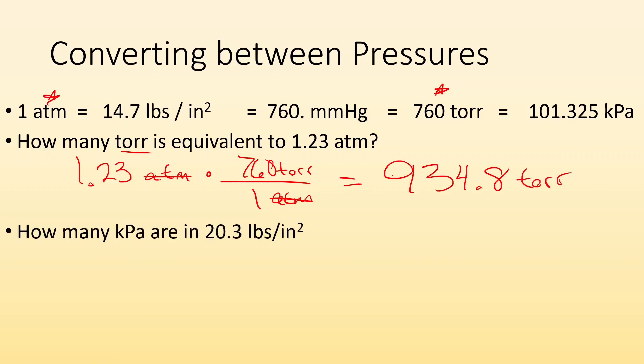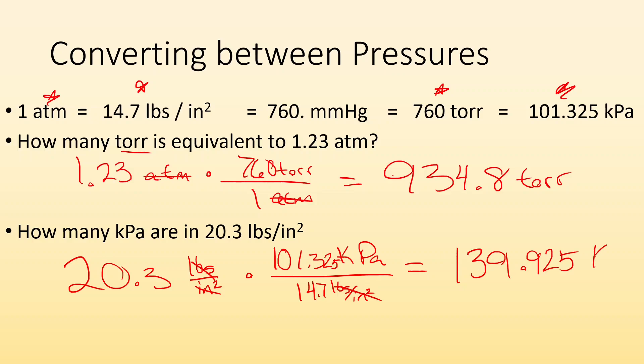Another example. How many kilopascals are in 20.3 pounds per square inch? So again start, I got 20.3 pounds per square inch. Let me figure out my conversion factor. If I'm trying to cancel out pounds per square inch I'm going to have to put that on the bottom and I'm trying to get kilopascals. So I put that on top and I look at my numbers and I know that 14.7 pounds per square inch is equivalent to 101.325 kilopascals. So when I plug and chug the pounds per square inch will cancel out and the number I get is 139.925 kilopascals.